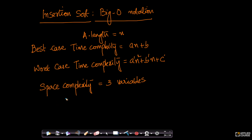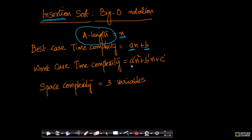For insertion sort, if the length of the array is equal to n, the best case time complexity is a·n + b, where a and b are constants. The worst case time complexity is a'·n² + b'·n + c', where a', b', c' are constants. The space complexity, whether best case or worst case, is just three variables.